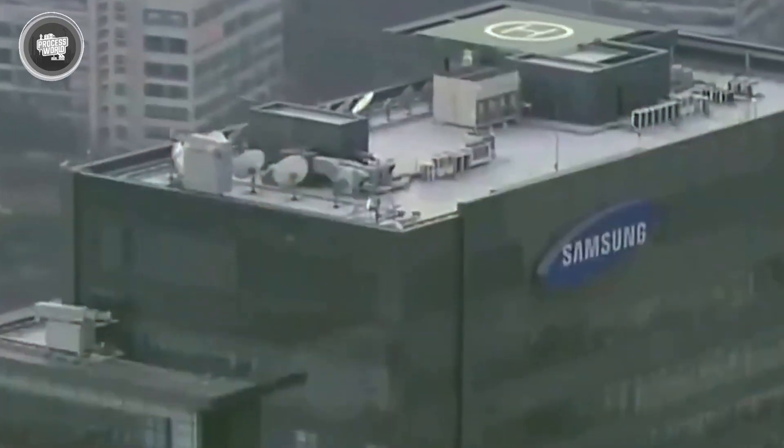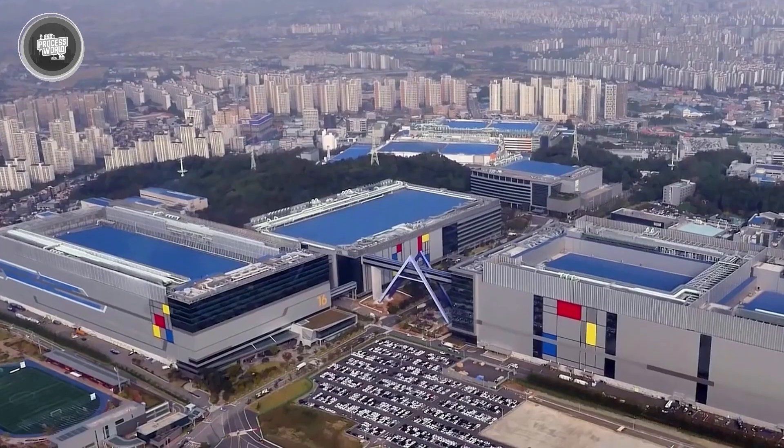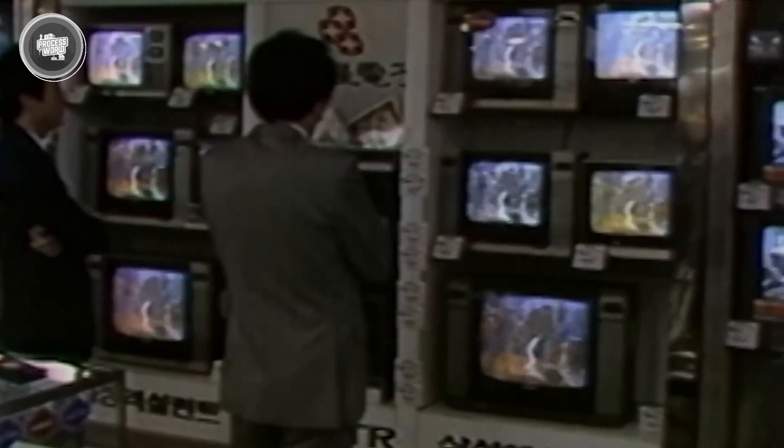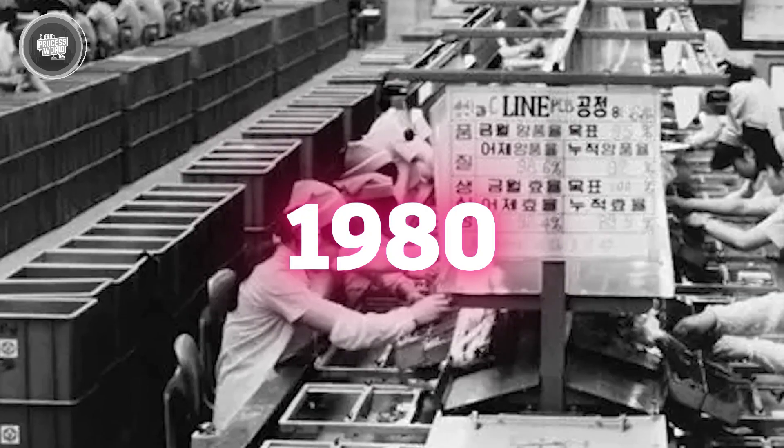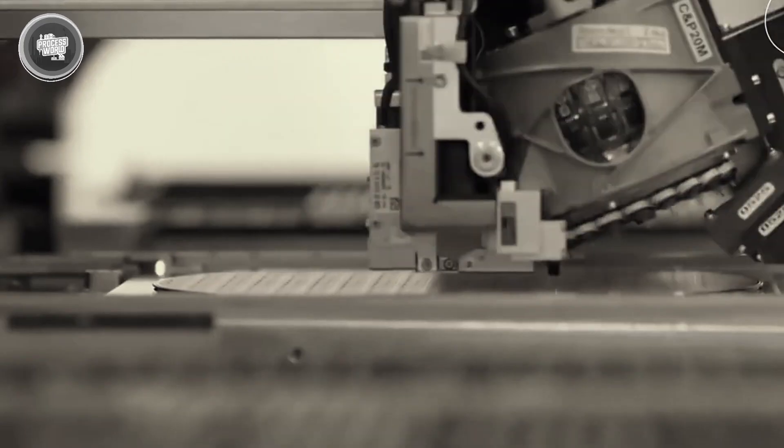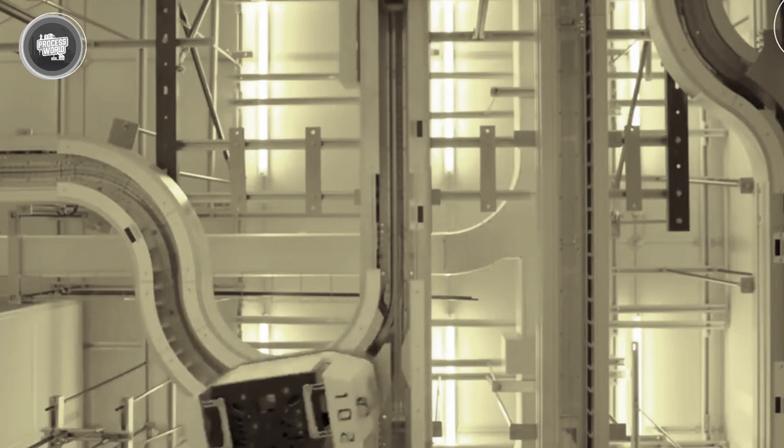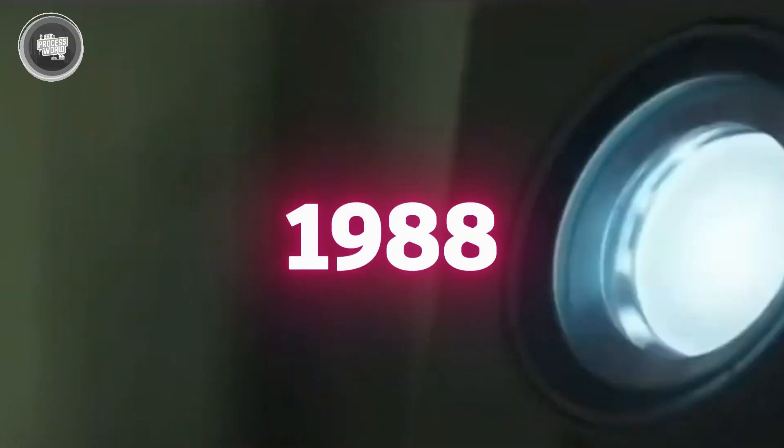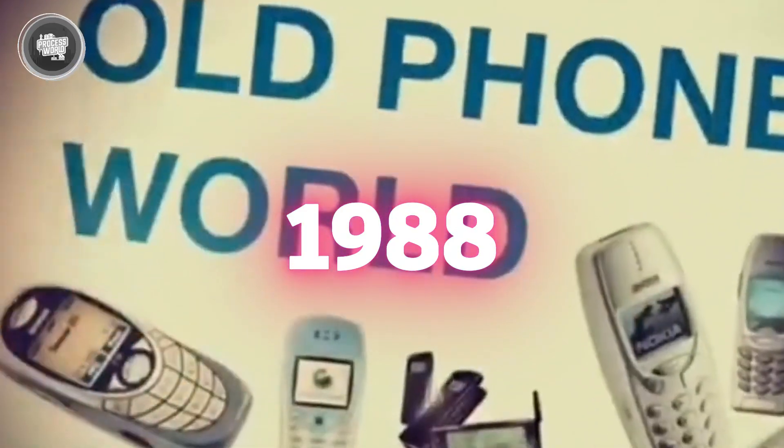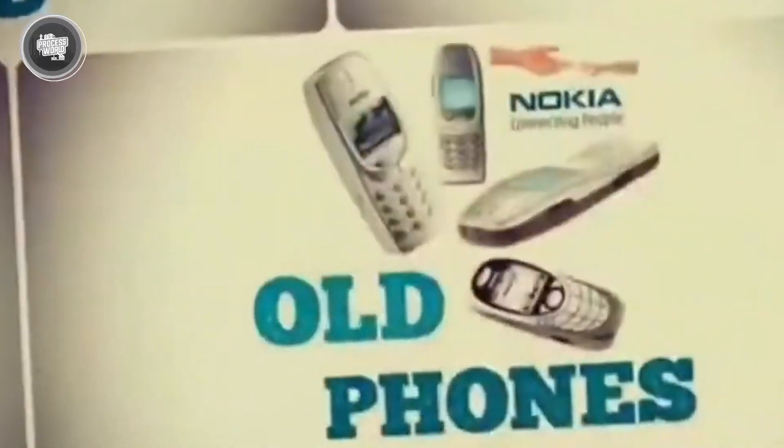Things started shifting in the late 1960s when Samsung entered the electronics industry. First came black and white TVs, then microwaves and washing machines. By the 1980s, they were already producing computers and building out factories to make semiconductors and memory chips. The mobile era started picking up in the early 90s. Samsung released its first mobile phone, the SH100, in 1988 just ahead of the Seoul Olympics. It wasn't a hit globally, but it marked the start of something much bigger.